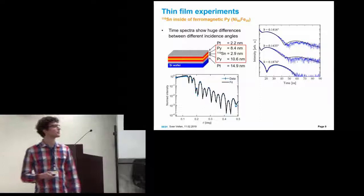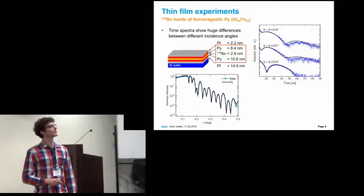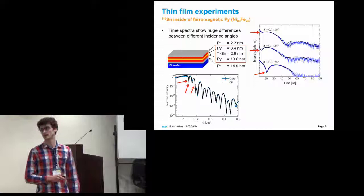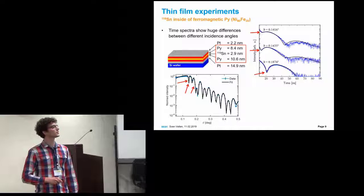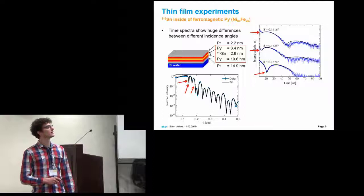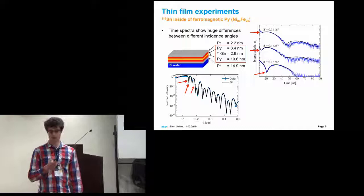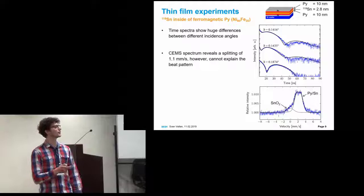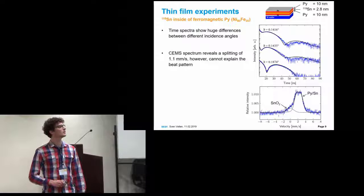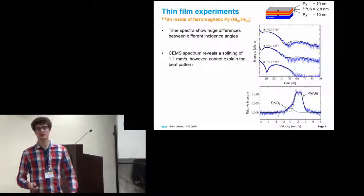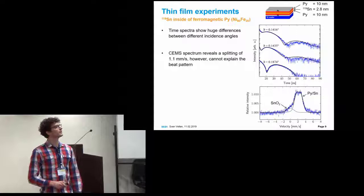Quite interestingly, the time spectrum changed quite drastically for different incident angles. We measured at the critical angle and inside of the waveguide minimum. The waveguide minimum, because we have some cavity-like structure with a platinum layer on top and platinum layer below it. We get a waveguide here inside. To explain this, we again performed CEMS measurements. We saw that we have a line splitting of 1.1 millimeter per second, which is very likely an electric field gradient.